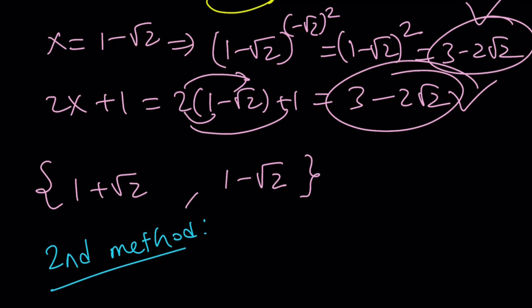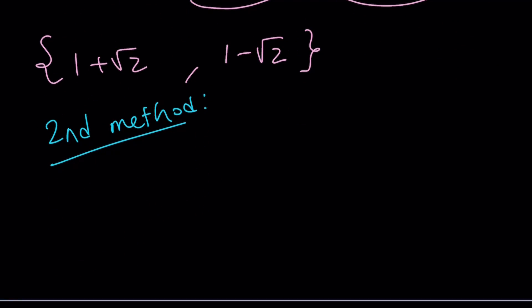let's take a look at the second method. I think the second method is really cool because when I looked at this problem, there must be a different way to do it. Here's what inspired me: I see (x-1)², which has x²-2x+1. And on the right-hand side, I have 2x+1.